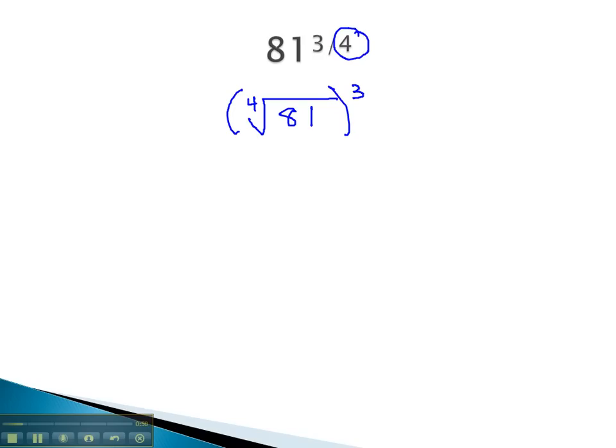We can quickly evaluate this by finding the prime factorization of 81 by dividing by 3: 27, by 3: 9, by 3: 3, and by 3: 1. We now have the fourth root of 3 to the fourth power, cubed.